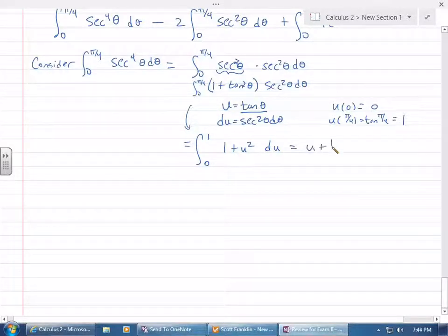So that's u plus 1 third u cubed from 0 to 1. So 1 plus 1 third minus 0 minus 0 gives me 4 thirds. So this first integral right here is 4 thirds.